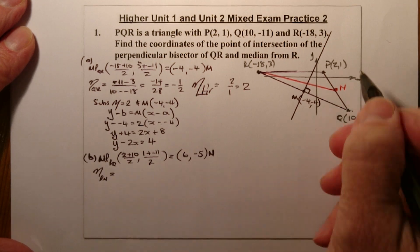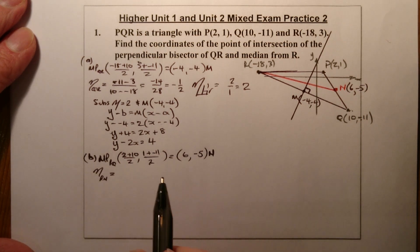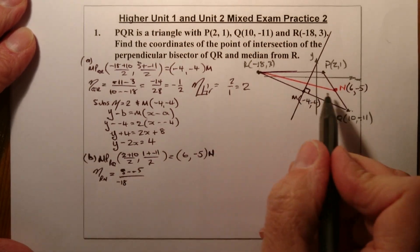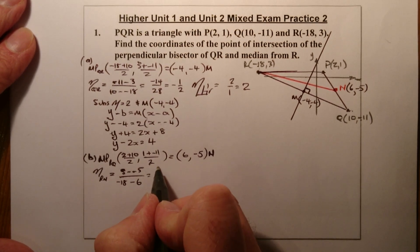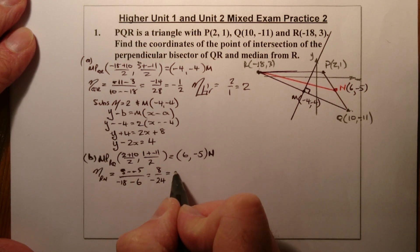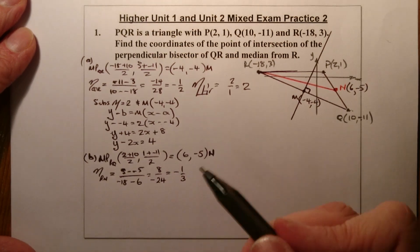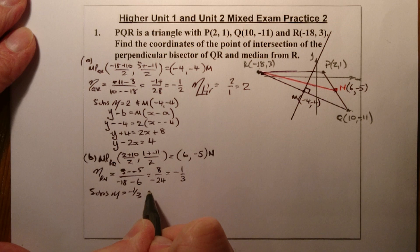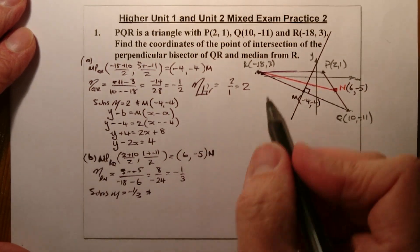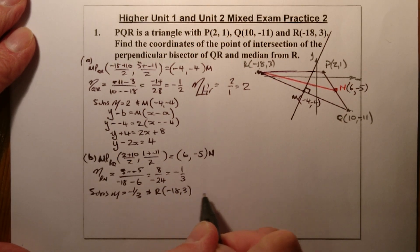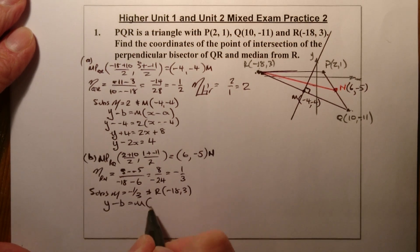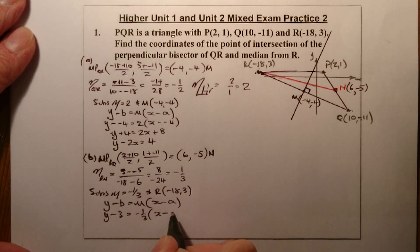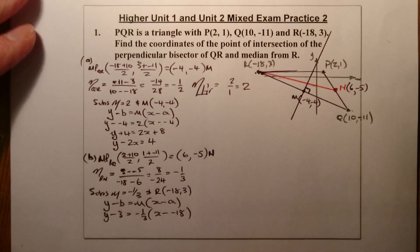Gradient of RN = (y2 - y1)/(x2 - x1). Using R at (-18, 3) and N at (6, -5): that's (3 - (-5)) / (-18 - 6) = 8 / -24, which simplifies to -1/3. I'm not taking a perpendicular gradient here because that's the gradient I want for the median.